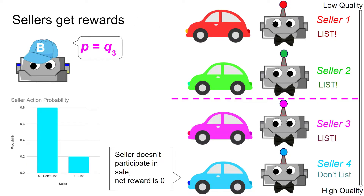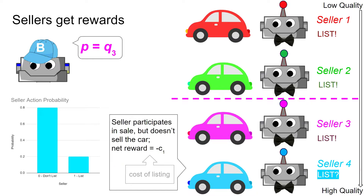Since the highest value seller does not participate in the sale, the net reward is zero — the seller neither gained nor lost anything. However, if the seller had participated in the sale, the net reward would be a negative value corresponding to the cost of listing, since the seller's car is valued so far above the buyer's price that the seller wouldn't want to sell the car.